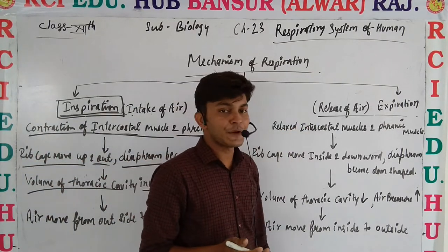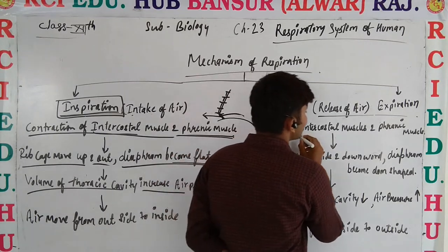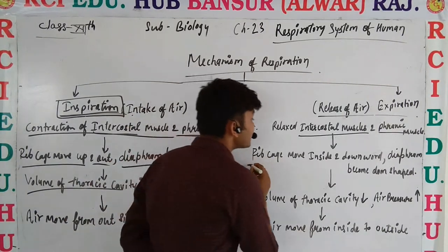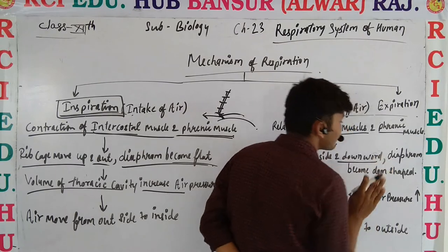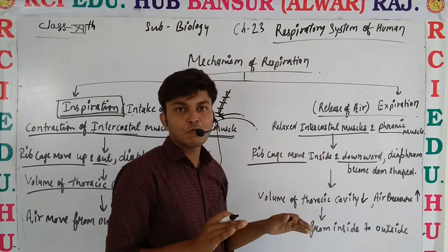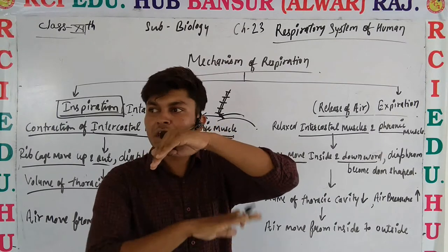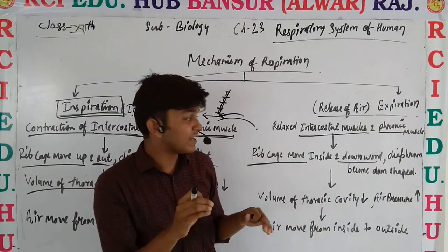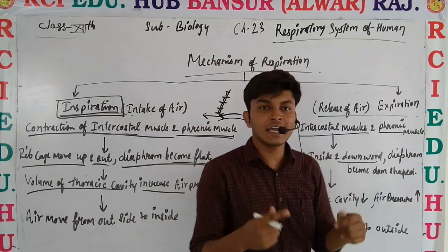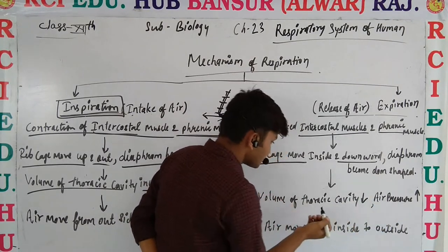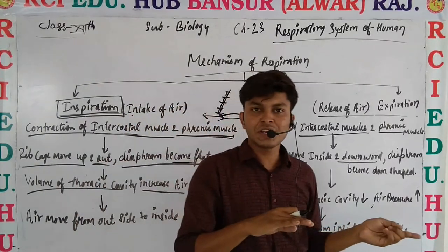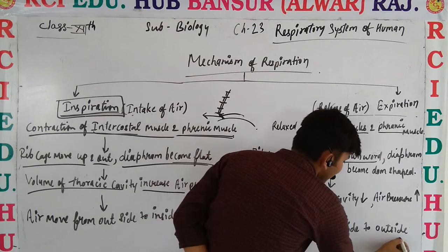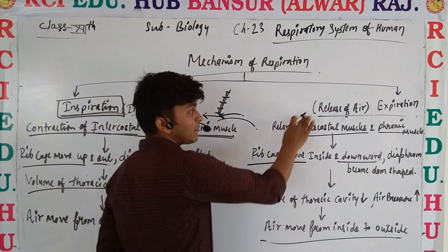Now, expiration: the external intercostal muscles and phrenic muscles relax. As they relax, the rib cage lowers and the diaphragm returns to its dome shape. The thoracic cavity volume decreases and air pressure inside increases. Since the outer pressure is now lower, diffusion takes place and air moves from inside to outside — that is expiration.